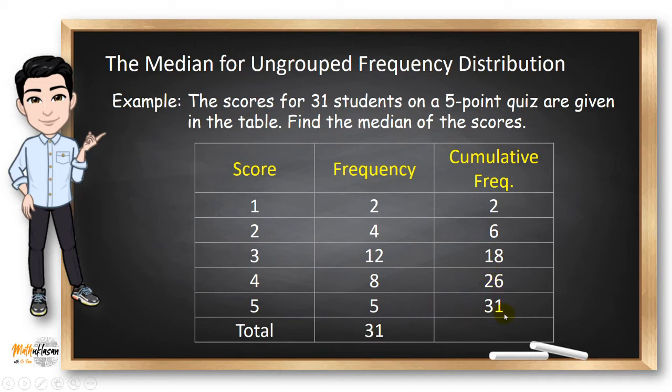The next step is to divide n with 2. So n in this case is equal to 31 or the total frequency. So 31 divided by 2, the answer is 15.5. Now, since the value of 15.5 is between 6 and 18, the corresponding value to the value above 15.5 is 3. Therefore, 3 is the median for this distribution.